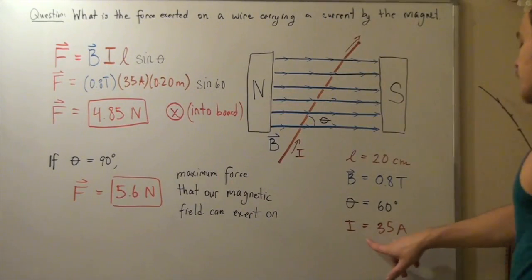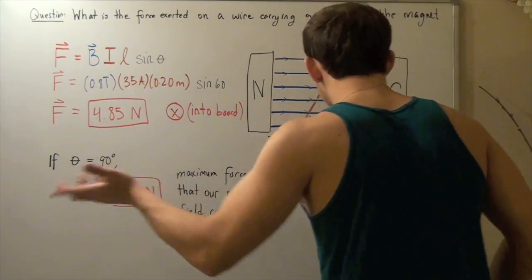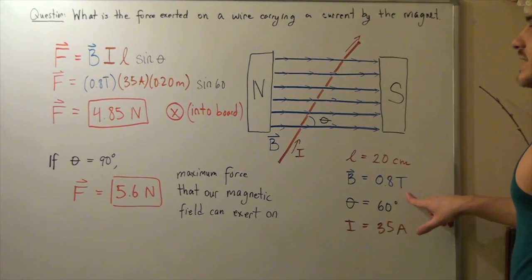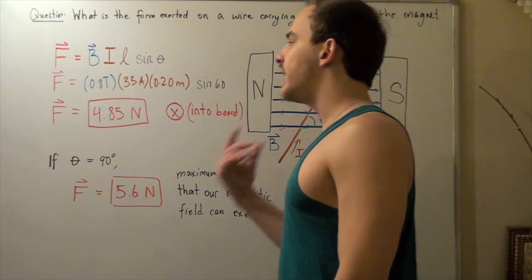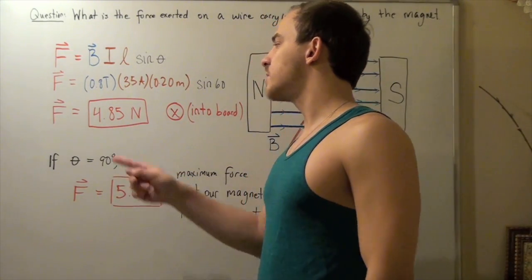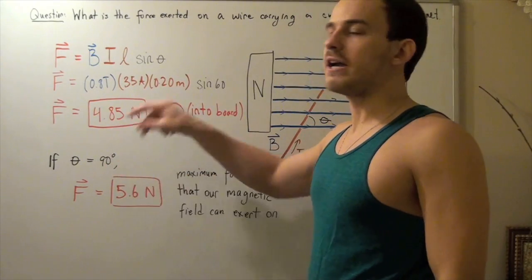Now, the I is simply 35 amps, and the B, or magnetic field, is 0.8 teslas. So, we plug these values in, plug them into our calculator, and we get our force to be approximately 4.85 newtons.